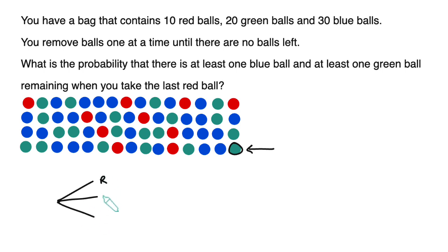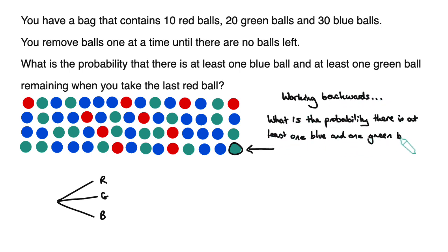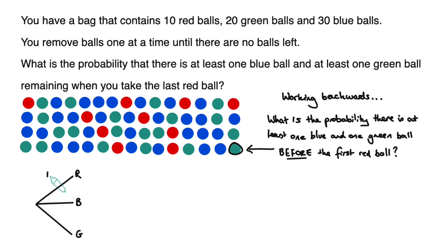The equivalent way of phrasing this problem, working backwards, is to ask: what is the probability that there is at least one blue ball and one green ball before we get the first red ball? Because if there's at least one blue and one green before that first red ball, then in the forward problem there would be at least one blue and one green left after we've taken the final red ball — which is what we want.